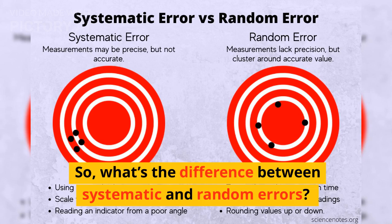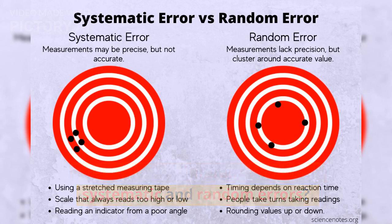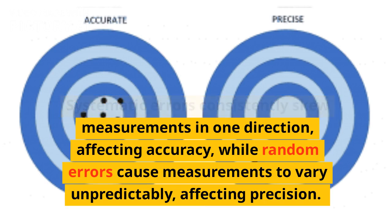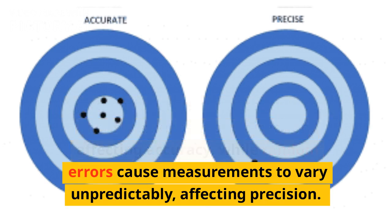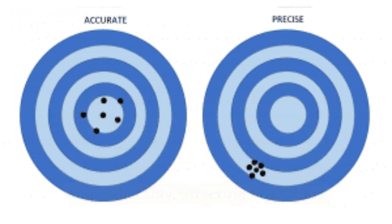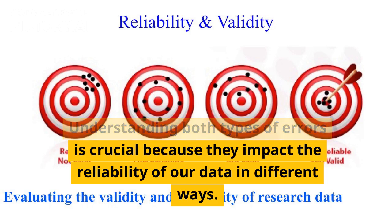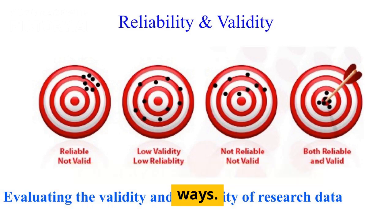So, what's the difference between systematic and random errors? Systematic errors consistently skew measurements in one direction, affecting accuracy, while random errors cause measurements to vary unpredictably, affecting precision. Understanding both types of errors is crucial because they impact the reliability of our data in different ways.